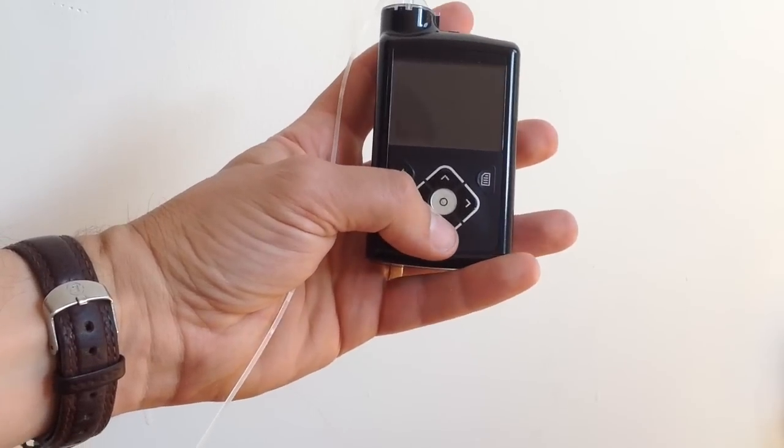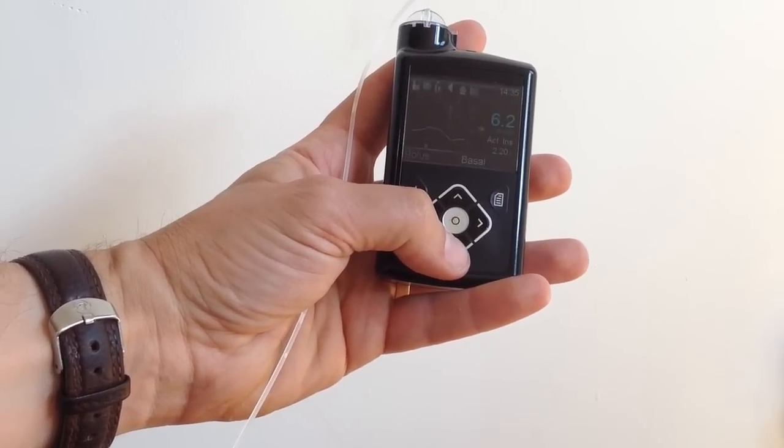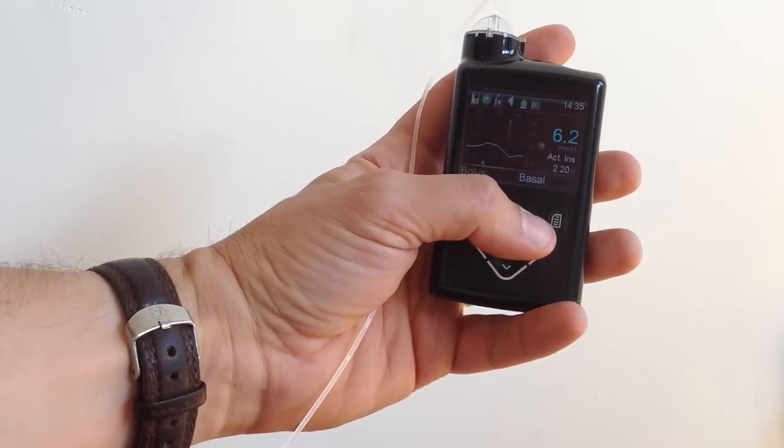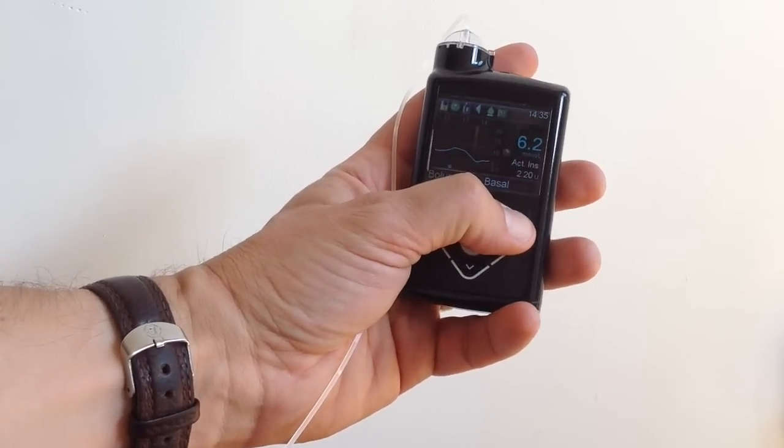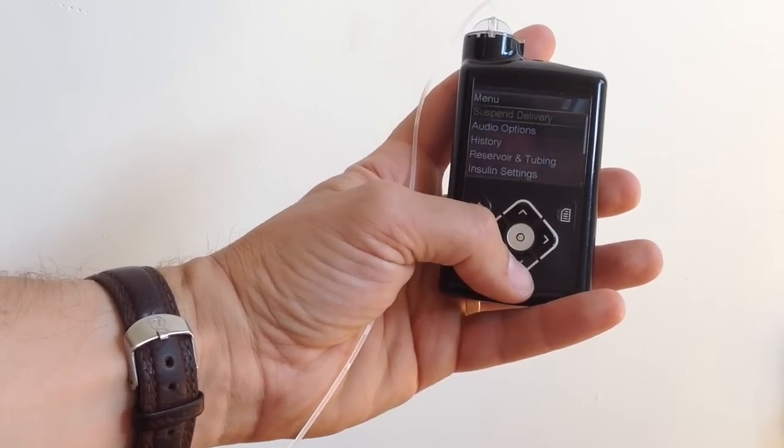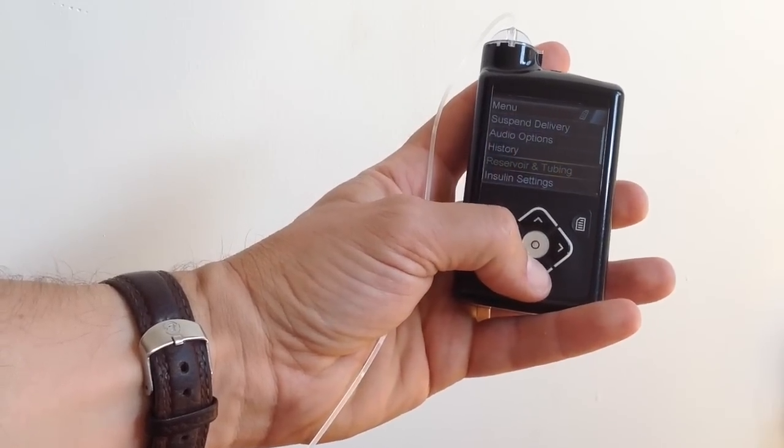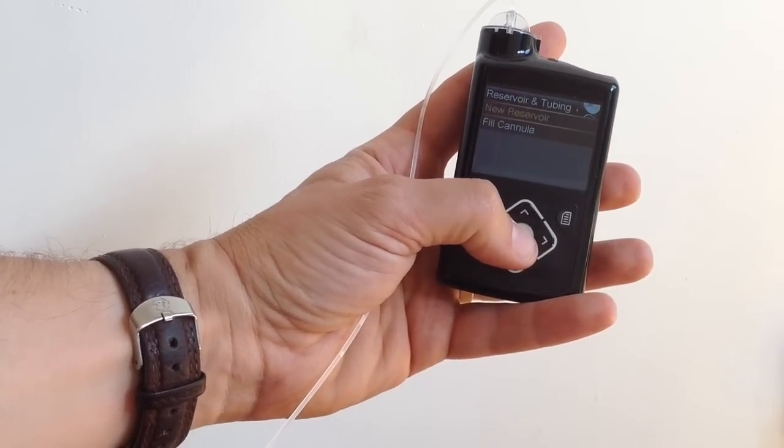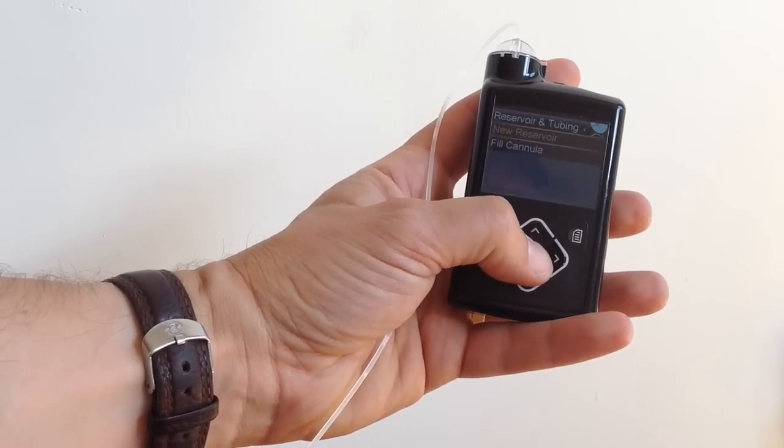So, here we go. Right, let's start. So first of all, you just go into the screen there, and then on the menu button, over here, you go down to reservoir and tubing. And then you select the new reservoir.